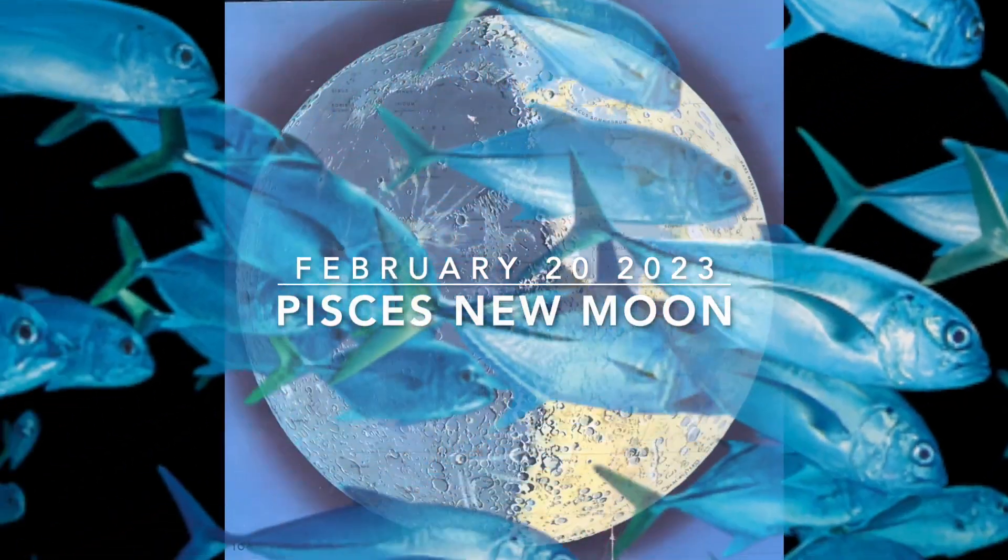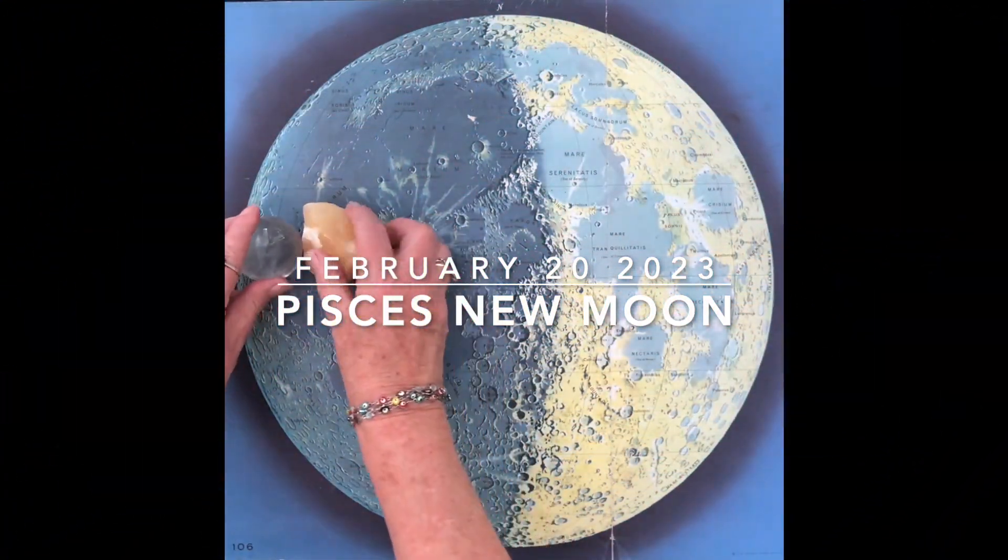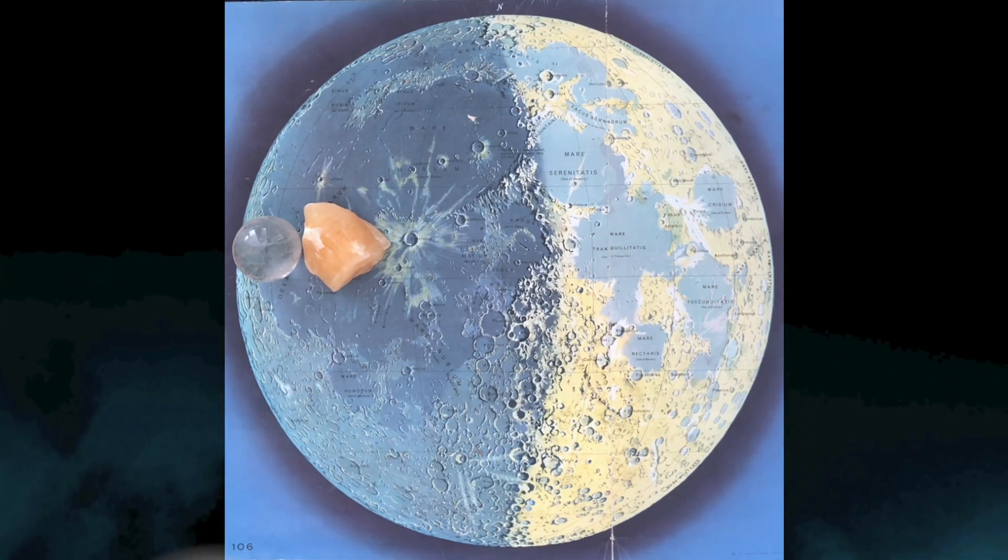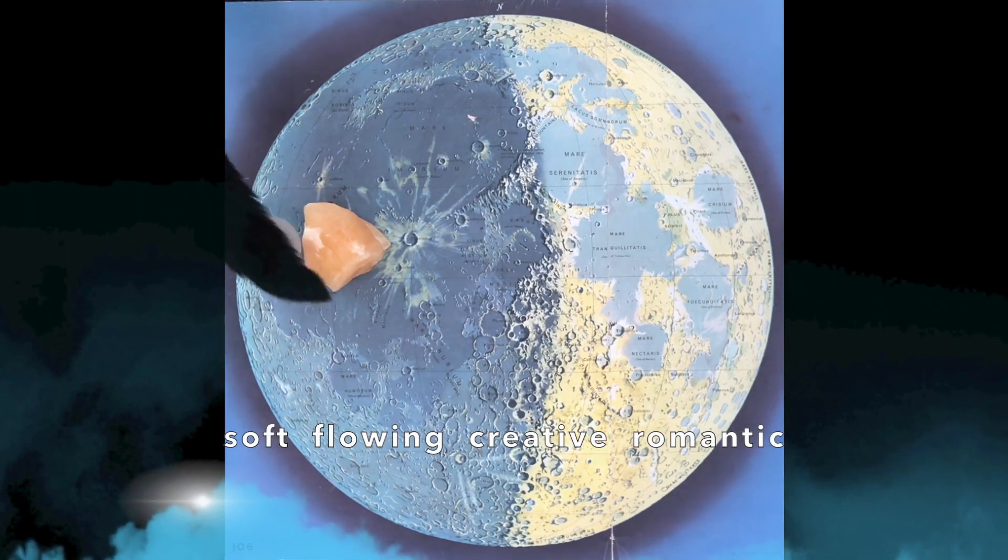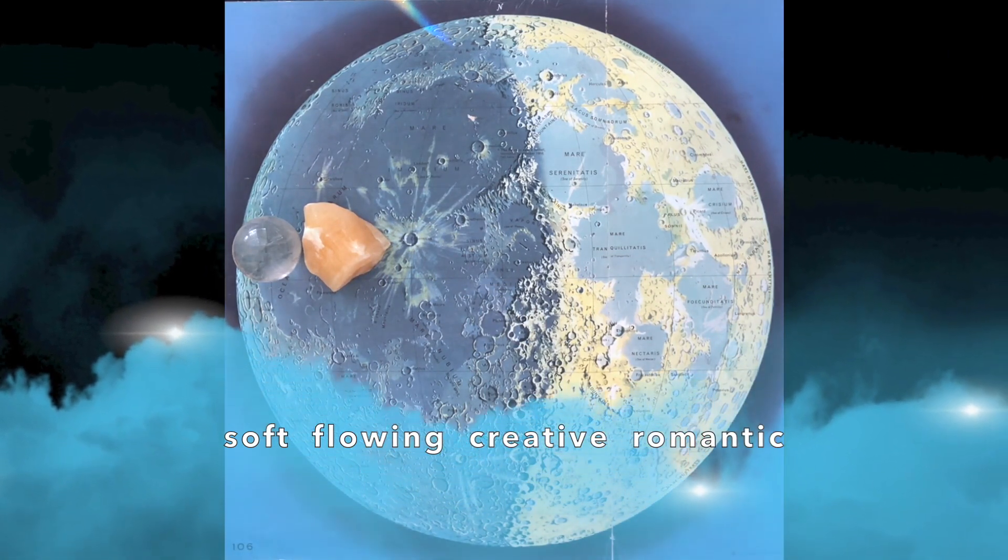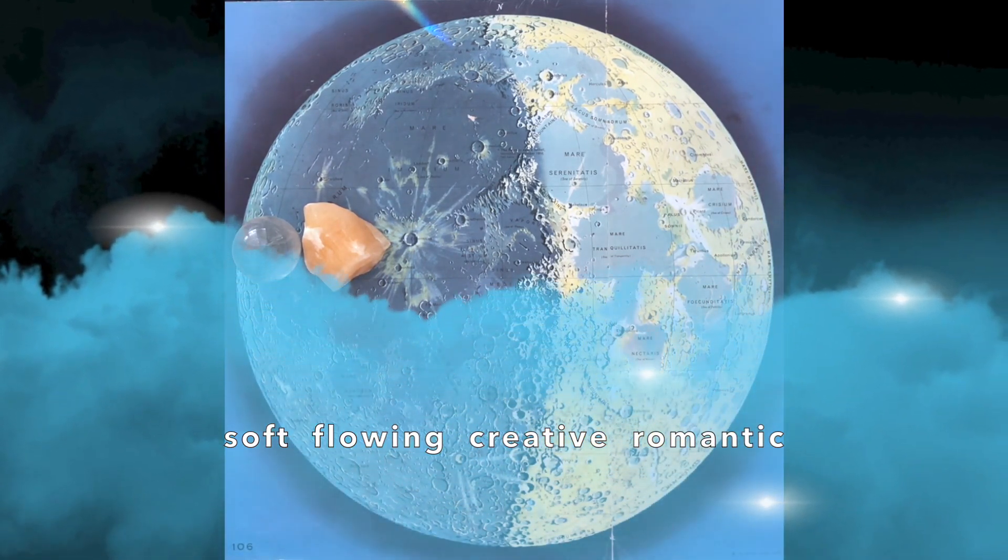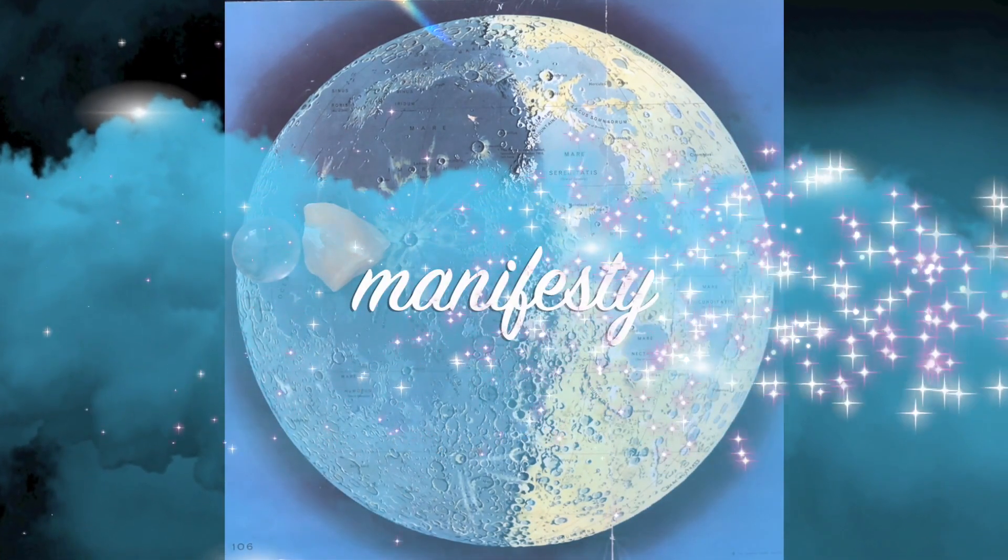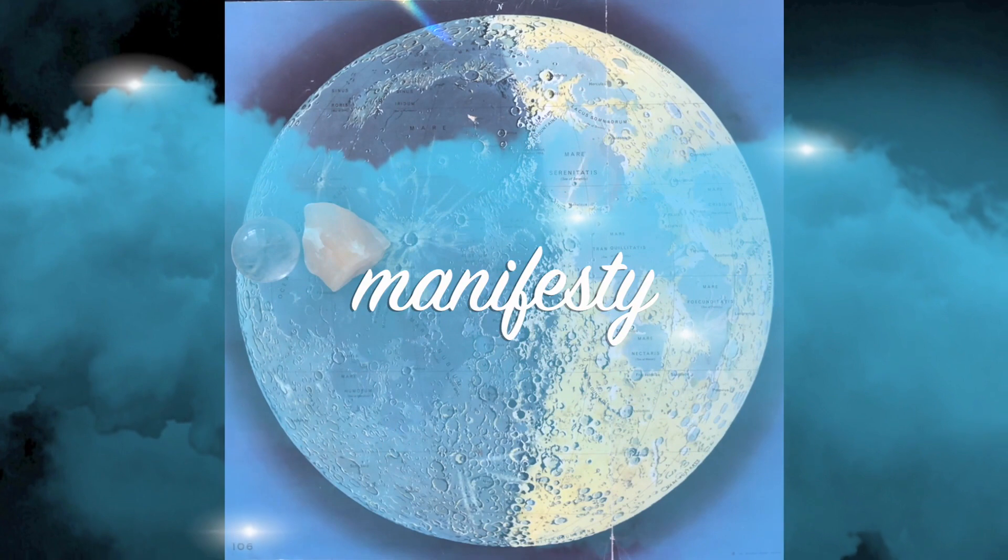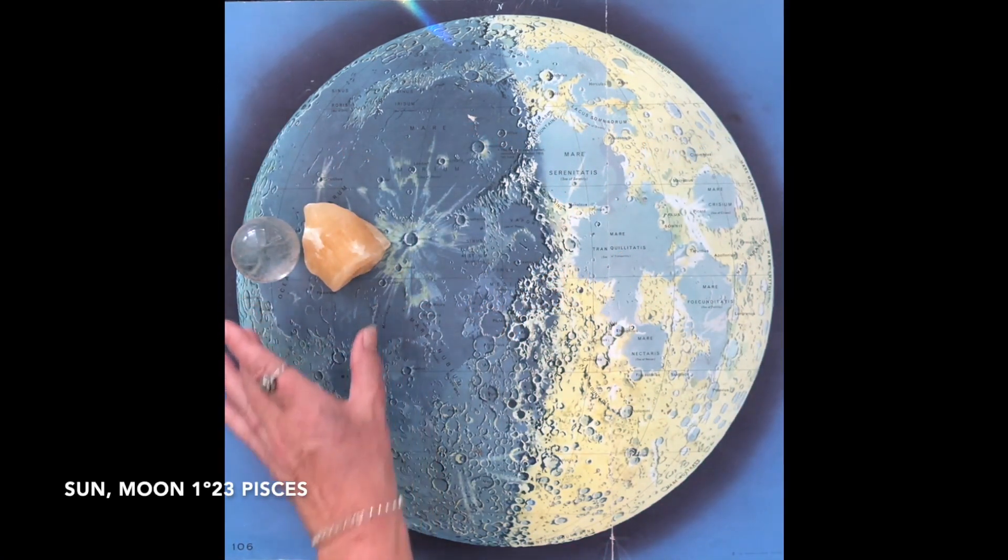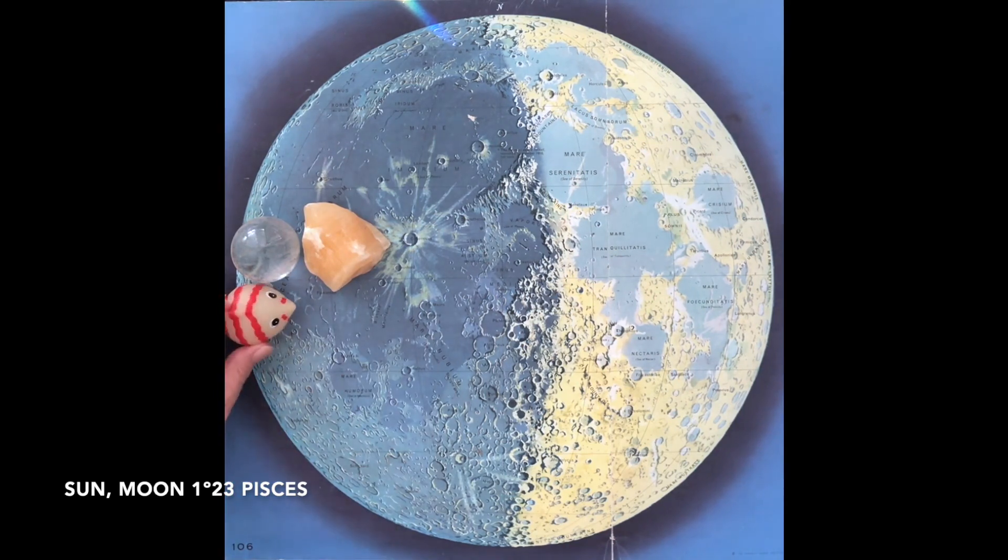On the 20th of Feb, the Pisces new moon clicks in. The moon loves to be in Pisces, where it's soft and flowy and emotional and creative. And it's also a perfect time to set your moon manifestations in place, because Pisces is the sun that can slip between the veil, reach into the other worlds and pull out your dreams. And this time it's right at the very beginning of Pisces, at one degree.